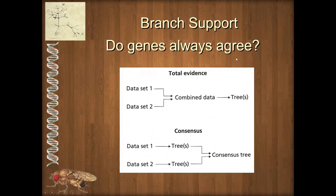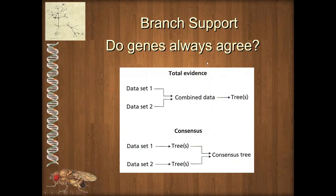Before we do that, there's an argument about when you have data, whether you should always combine it — meaning if you've got an 18S gene and a protein coding gene, do you combine them into one big matrix and make a tree, or do you figure out trees and then find a consensus? Most of the evidence shows we should probably always combine data as long as we can. Genes are not always going to agree — for instance, if you have paralogous copies of genes and don't recognize it, you might be tracing gene duplication events rather than species relationships.